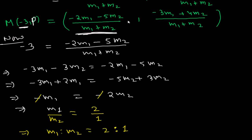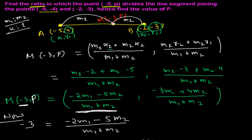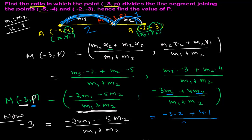So point M divides AB in the ratio 2:1. Now to find p, we use the y-coordinate formula with m1 = 2 and m2 = 1: p = (-3·2 + 4·1) / (2 + 1) = (-6 + 4) / 3 = -2/3. So the value of p is -2/3.